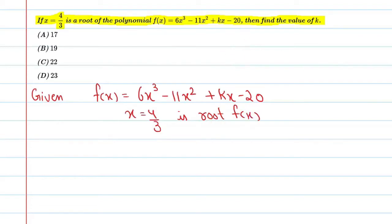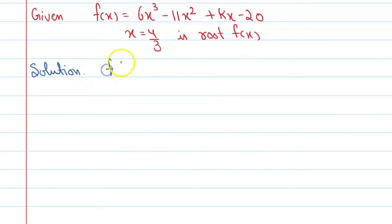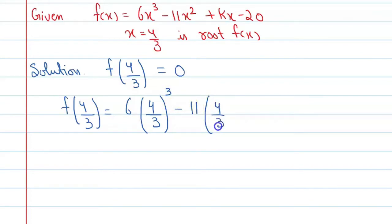Now start the solution. Look what we do here - we replace x by 4 by 3. So you can say f of 4 by 3 is equal to 6 times 4 by 3 whole raised to power 3, minus 11 times 4 by 3 whole raised to power 2, plus k times 4 by 3 minus 20.